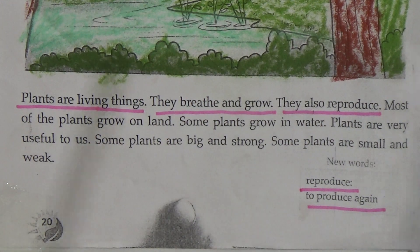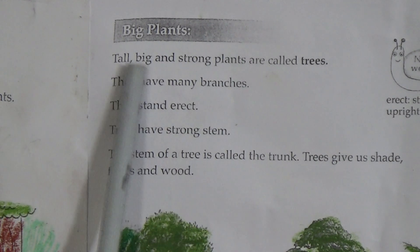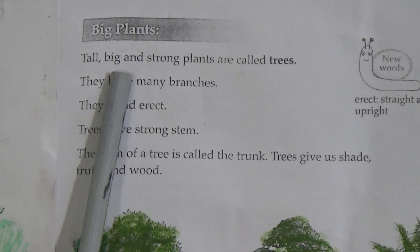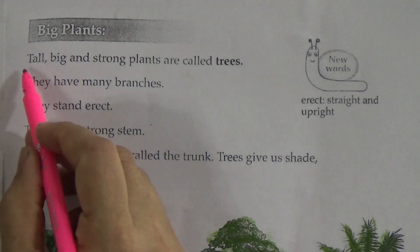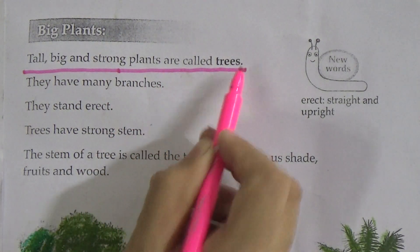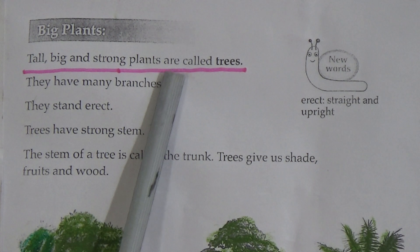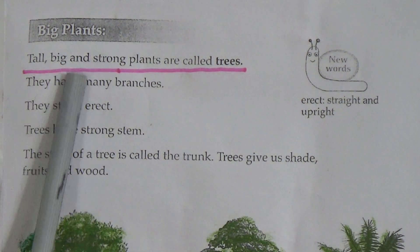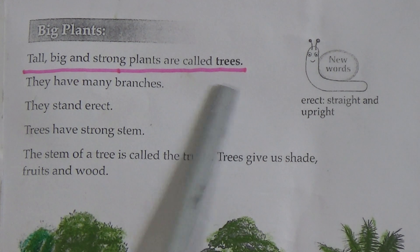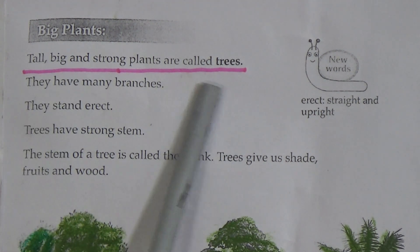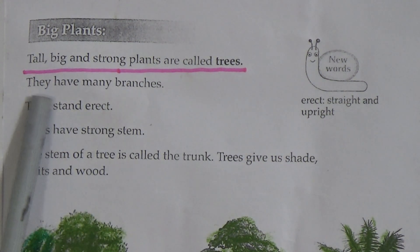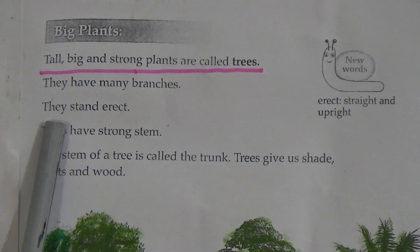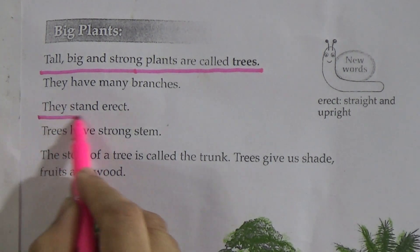Now come to the next page, page number 21. Big plants — tall, big, and strong plants are called trees. Underline this line and memorize it properly; this is a very important line. What are trees called? Tall, big, and strong plants are called trees. Trees have many branches and they stand erect.